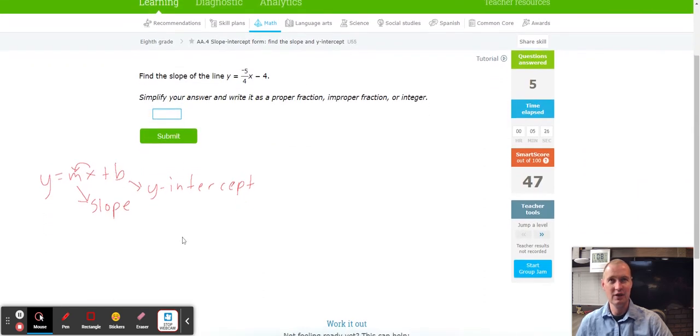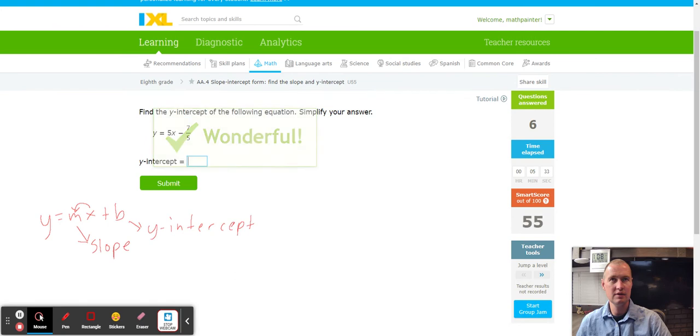Find the slope right before the x, we have negative five over four. The y-intercept is the value without the x, so in this case we're going to include the negative as well. And by the way, negative and subtraction are the same thing, so negative seven over five.